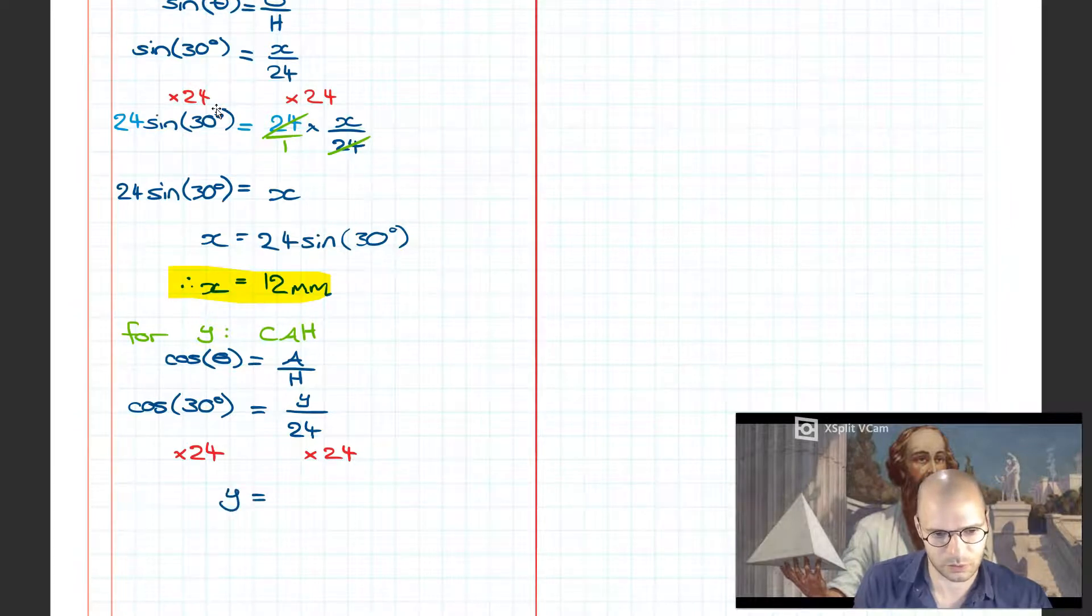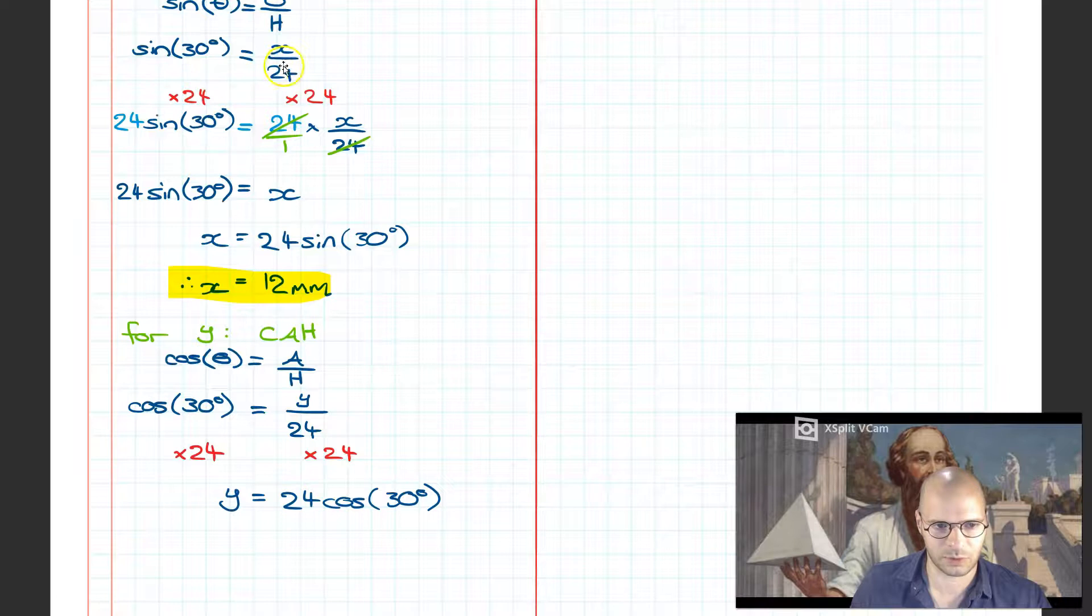Filling in the values, still working with 30 degrees, the A becomes unknown Y and it's 24 still on the bottom. Rearranging such that Y becomes the subject, I simply multiply by 24. Because I did this exact same step in the previous example, I'm just going to skip to the final rearrangement which is Y equals 24 cosine of 30 degrees.